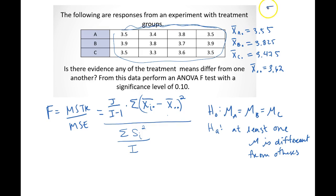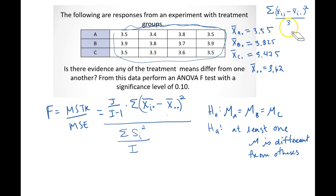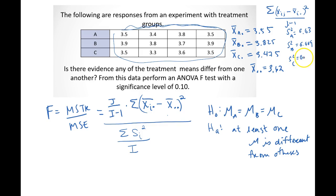If we calculate the variances by hand, recall that's each observation minus its mean, squared, summed, and divided by J minus one. Doing that for each group: S squared A equals 0.03, S squared B equals 0.009, and S squared C equals 0.016.